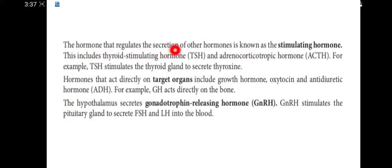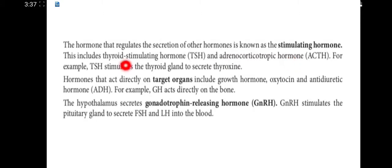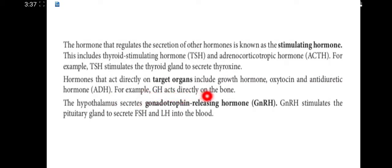Hormones that regulate the secretion of other hormones are known as stimulating hormones. This includes TSH (thyroid stimulating hormone) and ACTH (adrenocorticotropic hormone). For example, TSH stimulates the thyroid gland to secrete thyroxine. Hormones that act directly on target organs include growth hormone, oxytocin, and ADH. For example, growth hormone acts directly on the bone.